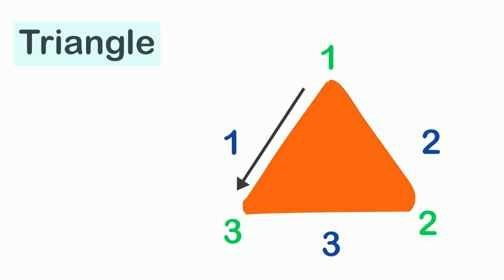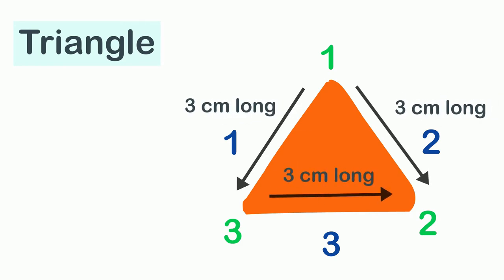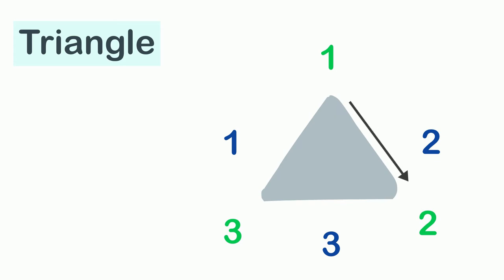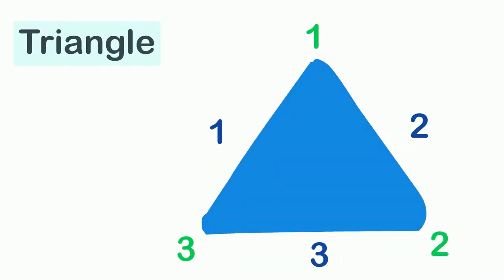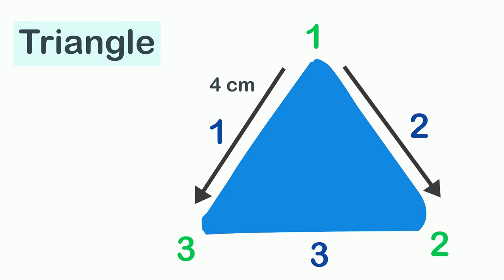For instance, this triangle has all three sides three centimeters long. This one has two sides three centimeters long and one side two centimeters long. And this triangle has one side of four centimeters, a second side of two centimeters, and a third side of five centimeters.